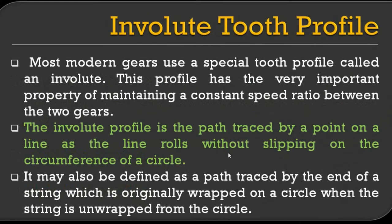Most modern gears use a special tooth profile called the involute profile. Most gears use involute profile because involute profiles have their own advantages compared with cycloidal profiles. This profile has the very important property of maintaining a constant speed ratio between the two gears. The involute profile is the locus of a point on a straight line as the line rolls without slipping on the circumference of a circle.